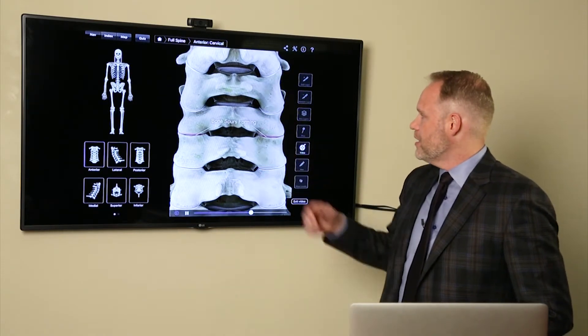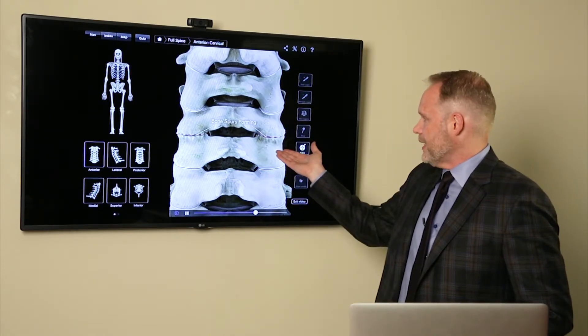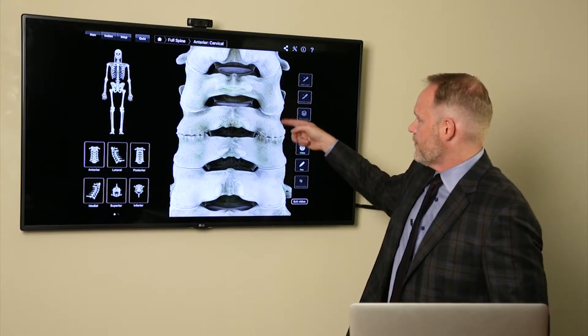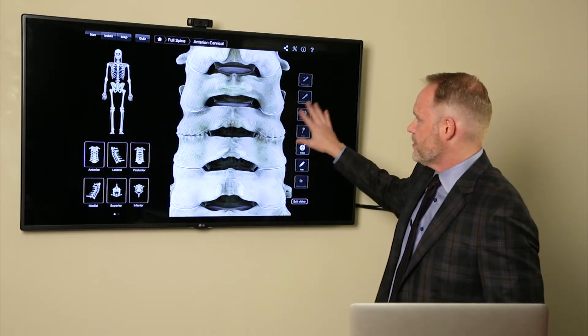In any event, back to the animation, we see the bone spurring. Now we don't have, if you look at the nice smooth surface above, again, we have that nice gliding surface. There's no bone spurs.